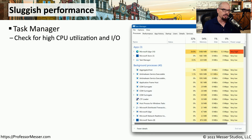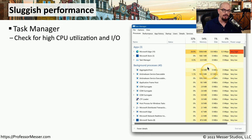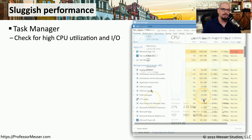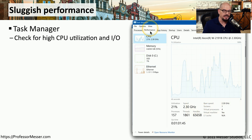Another common troubleshooting call is that your system is running slowly or acting sluggish. One way to see a real-time view of what's going on with your system resources is to use Task Manager. This will provide you with information about CPU usage, how much memory is being used, and give you an idea if any resources may be limited on the system. You might even want to try using the Performance tab to see trends with CPU, memory, disk usage, or network usage.